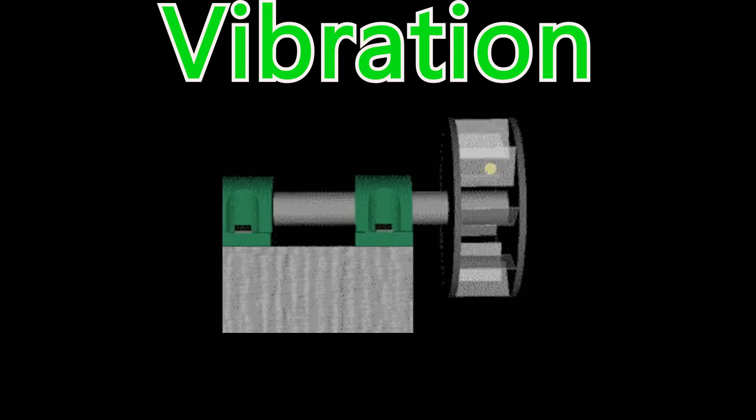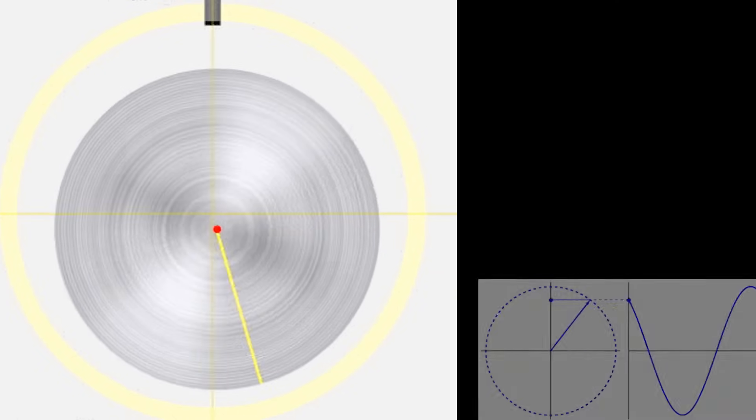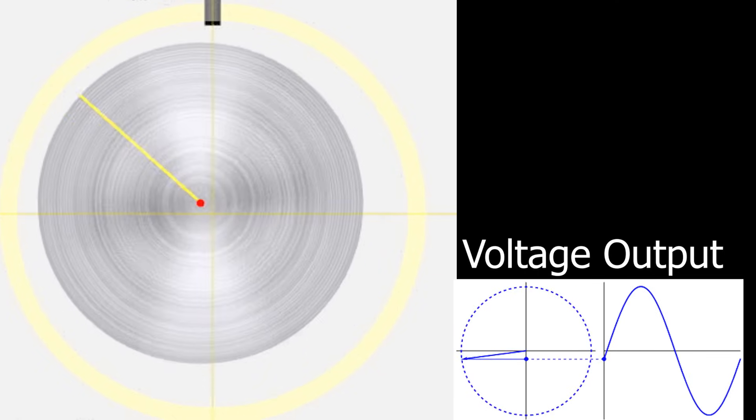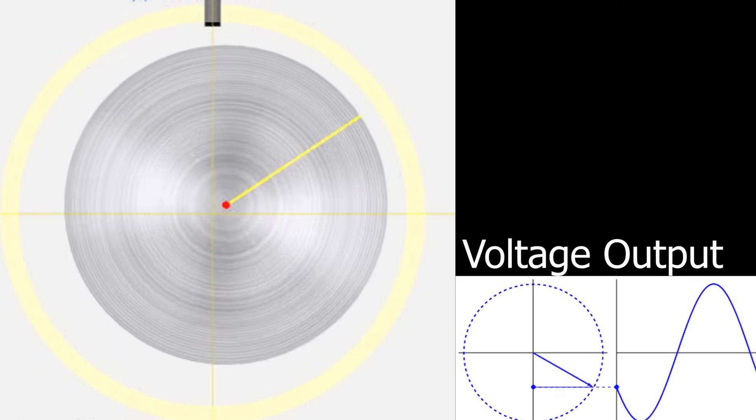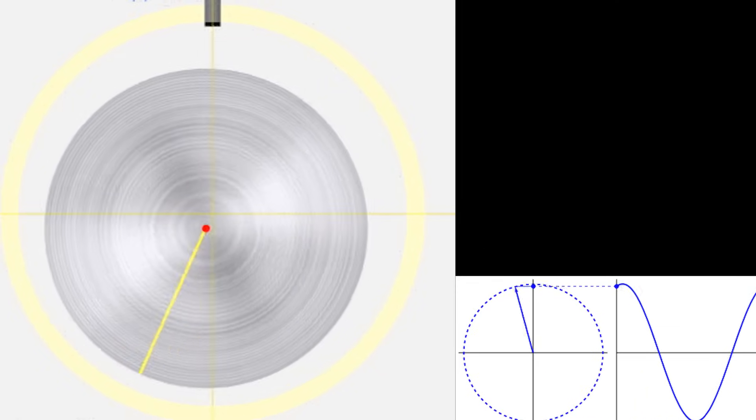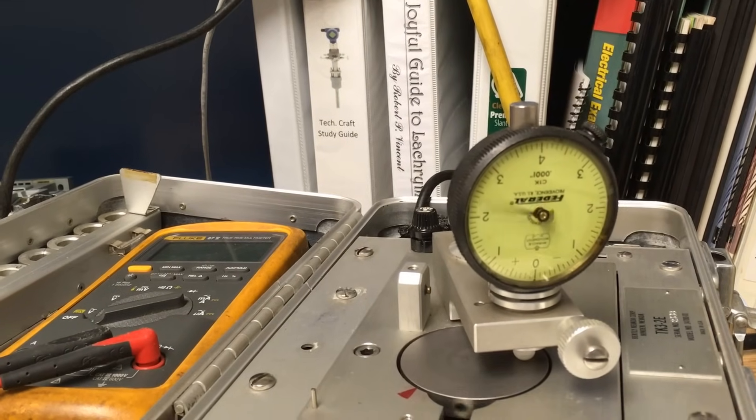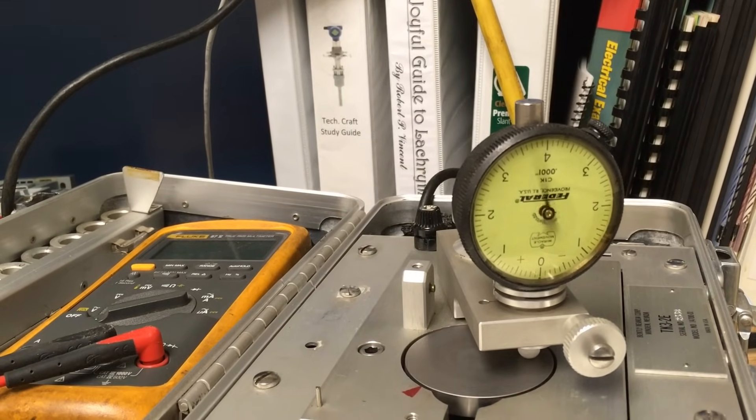If you want to measure vibration, the DC gap voltage will not work. When vibration occurs, the voltage will begin to oscillate as the distance between the probe and the shaft changes. If you notice on this demonstration, this vibration simulator machine is producing a 10 mil oscillation.